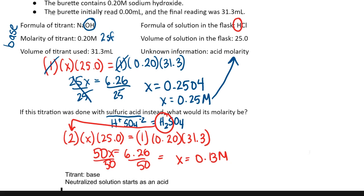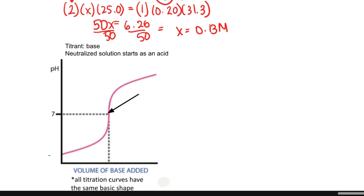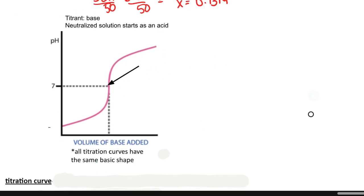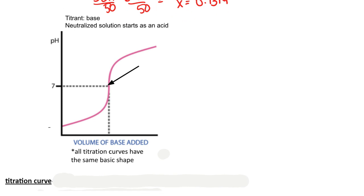Now another thing we can do with the titration is we can turn it into this graph which we call a titration curve. So in this example, just because that's what I picked, the titrant, remember, is the thing in the burette and that was a base. So that means I was titrating an acid. At the end that acid will become neutralized, but in the beginning it is an acid.